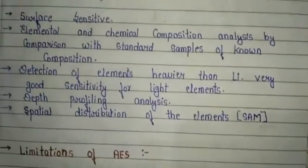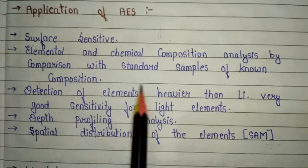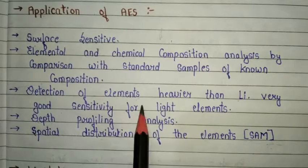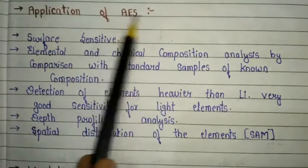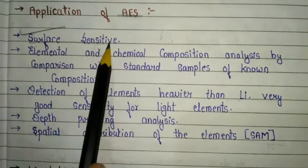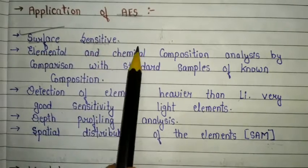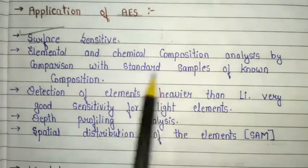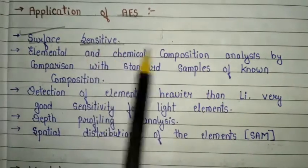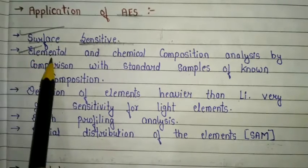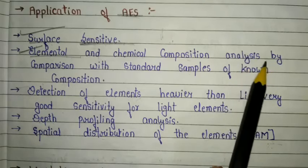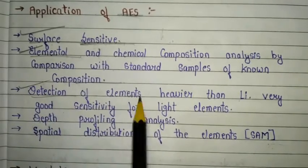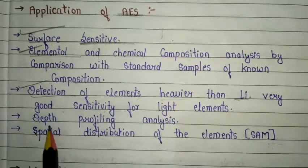Now let's discuss the applications of Auger electron spectroscopy. The first application is that it is a surface-sensitive technique — it is more sensitive to atoms located near the surface than to atoms in the bulk that are far from the surface. The second important application is elemental and chemical composition analysis by comparison with a standard sample of known composition. Third is detection of elements heavier than lithium, with very good sensitivity for light elements.